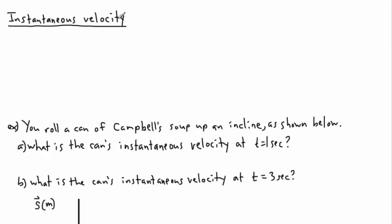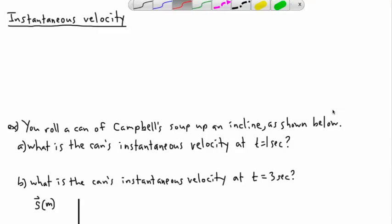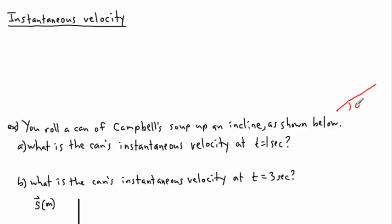Next I'll show you instantaneous velocity. The example involves rolling a can of Campbell's soup — my last name is Campbell, so that's why I use it. We roll the can up a hill; it rolls up, stops, and comes back down.